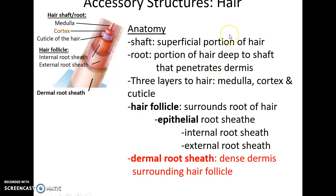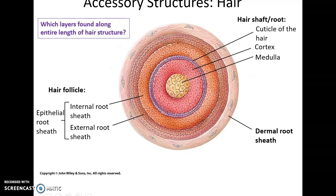There are three layers to the hair shaft and root: the innermost layer is the medulla, outside of that is the cortex, and outside of that is the cuticle. The hair follicle surrounds the hair root and has its own layers: the epithelial root sheath (made of an internal and external root sheath) and a dermal root sheath, which is a densening of the dermis around the hair follicle. A transverse cut of a hair shows the various layers of the hair and follicle.